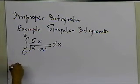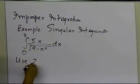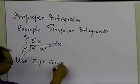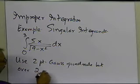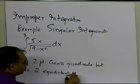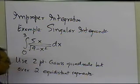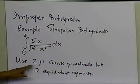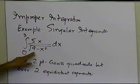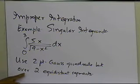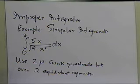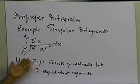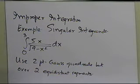In the previous example, we used the two-point Gaussian quadrature rule. In this case, we still want to use the two-point Gaussian quadrature rule, but over two equidistant segments. In the previous example, we applied it from 0 to 3. Here, because we got a very large percentage error of about 25 percent, we are thinking we should break this interval into two equidistant segments and then apply the two-point Gaussian quadrature rule over each of those segments.